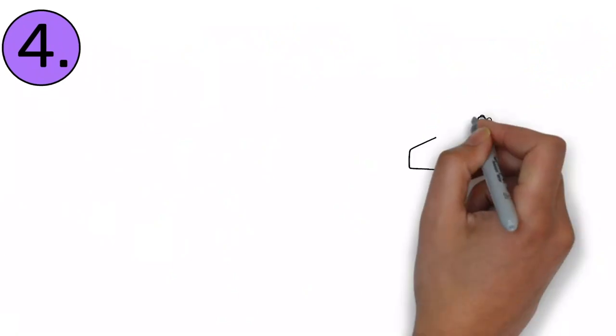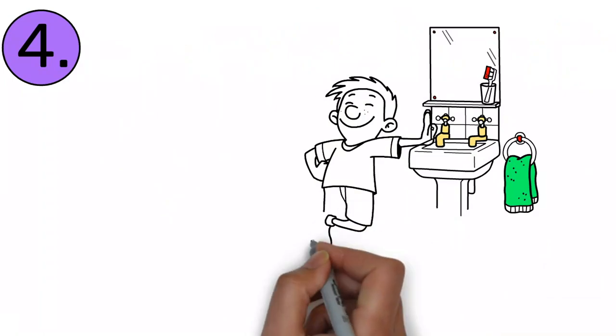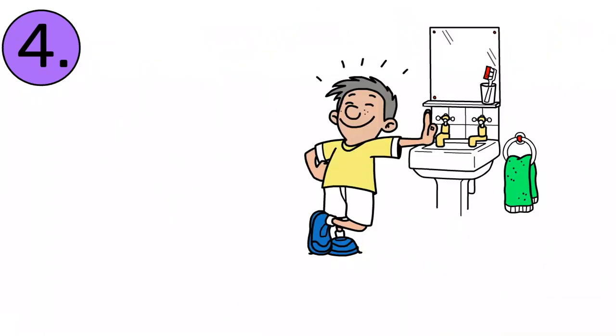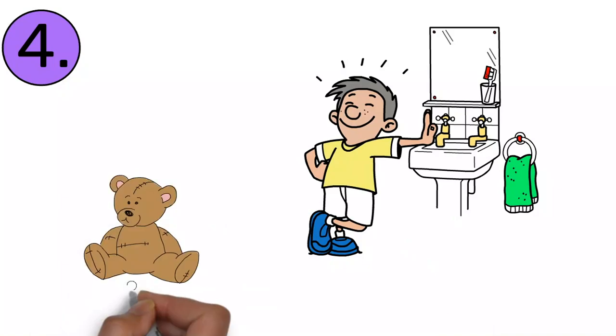Our fourth tip is to make bath time all about your kiddo. Add elements that they enjoy, like toys, or maybe fun colors in the bubbles, something your kiddo is going to get excited about because it's all about making bath time fun.